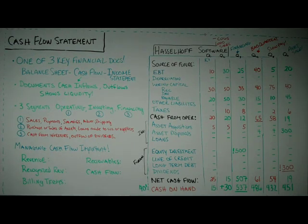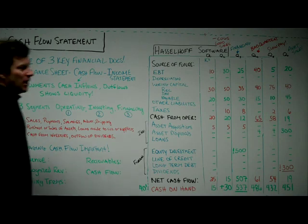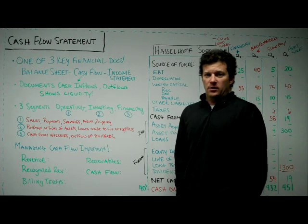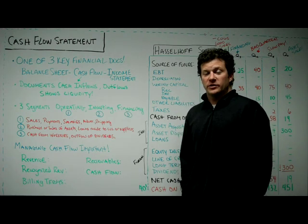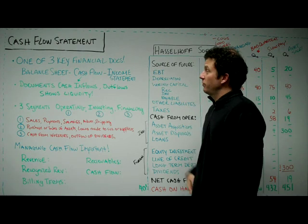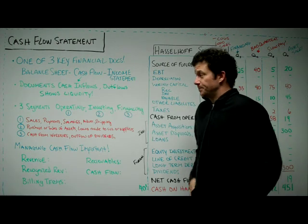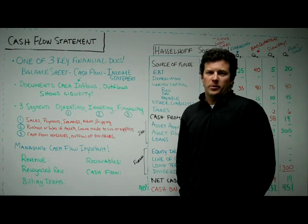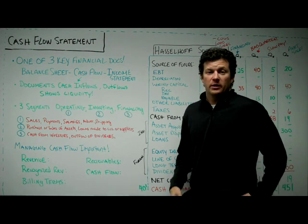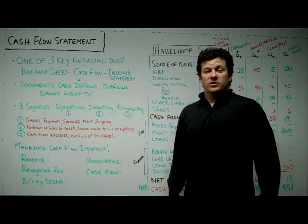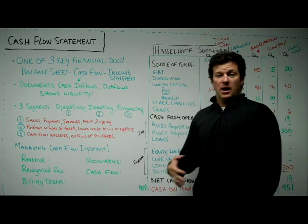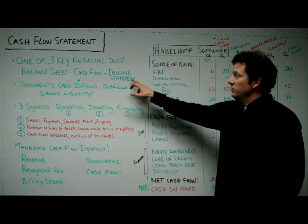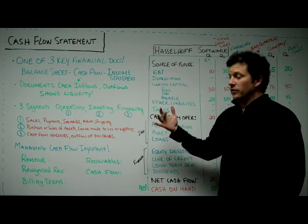Cash flow statement. If you've watched the videos on balance sheet and income statement, which you should in order to understand the cash flow statement, you'll know that it's one of three key financial documents. These documents are used to diagnose a company's performance and watch what a company's doing in various parts of the business so that managers can make decisions about how potentially to change operations. The three key financial docs are balance sheet, cash flow, and income statement.